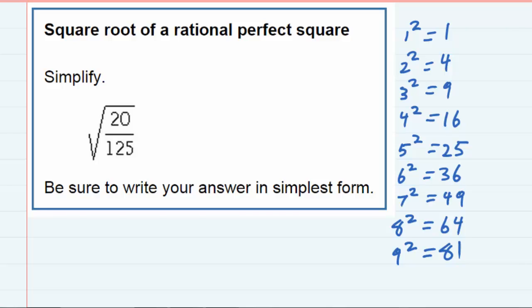Square root of a rational perfect square. We're asked to simplify, and the radical has a fraction underneath it.